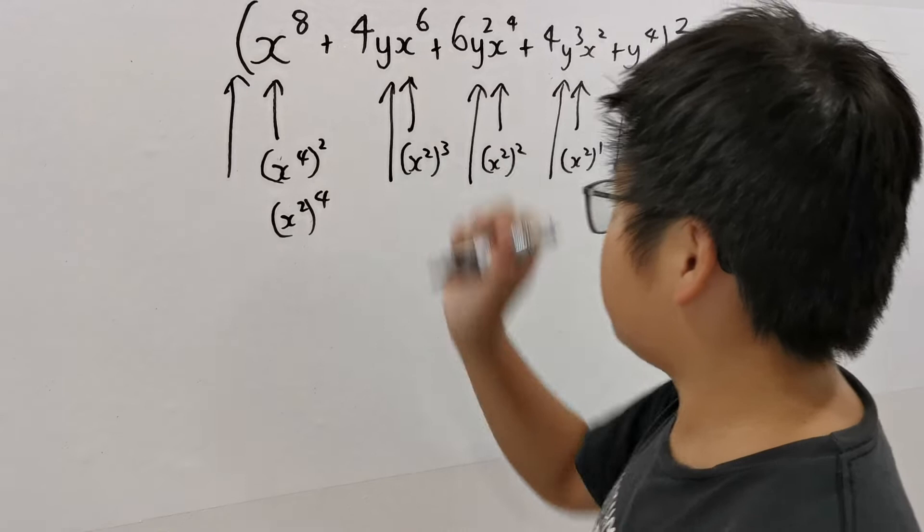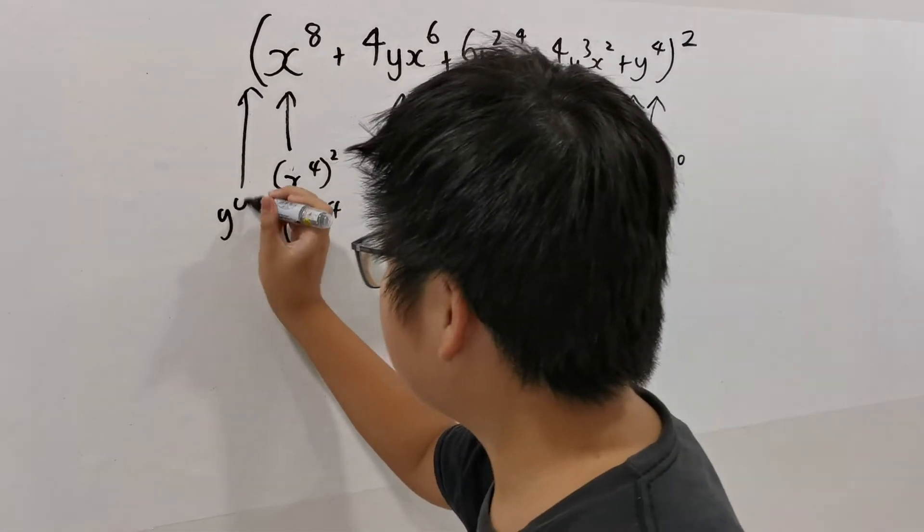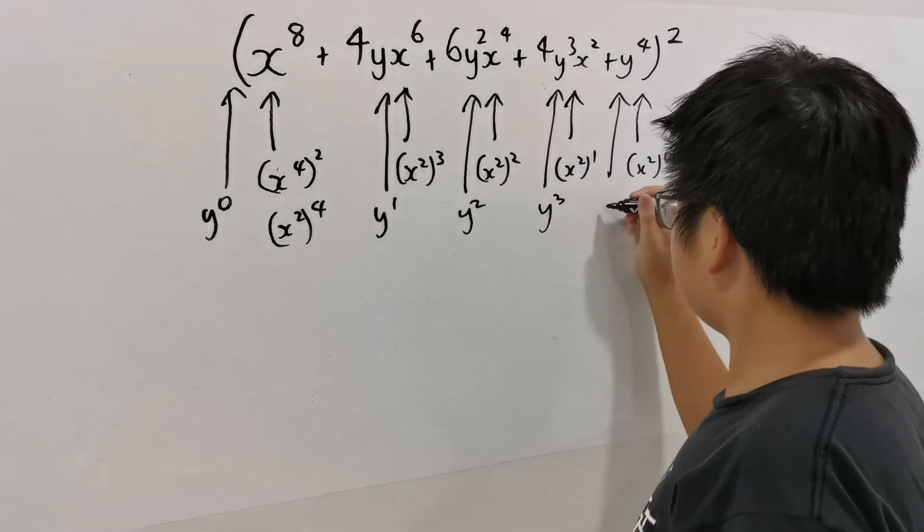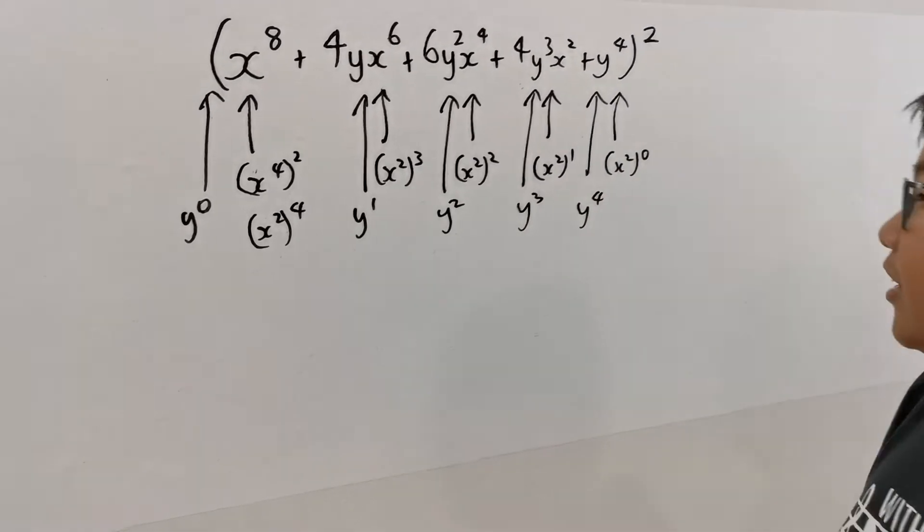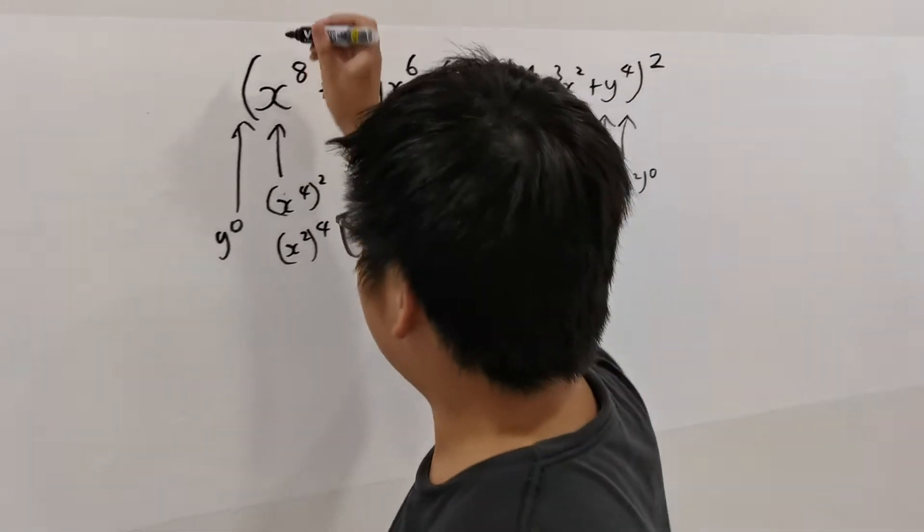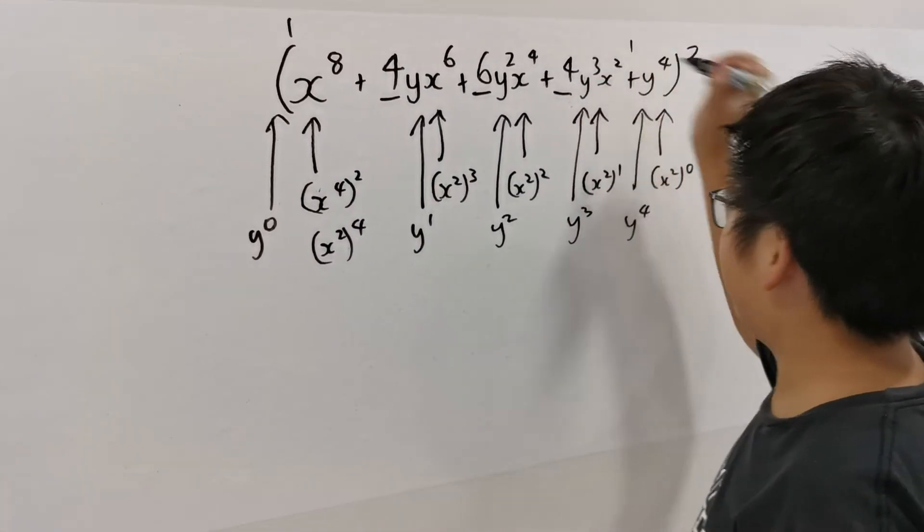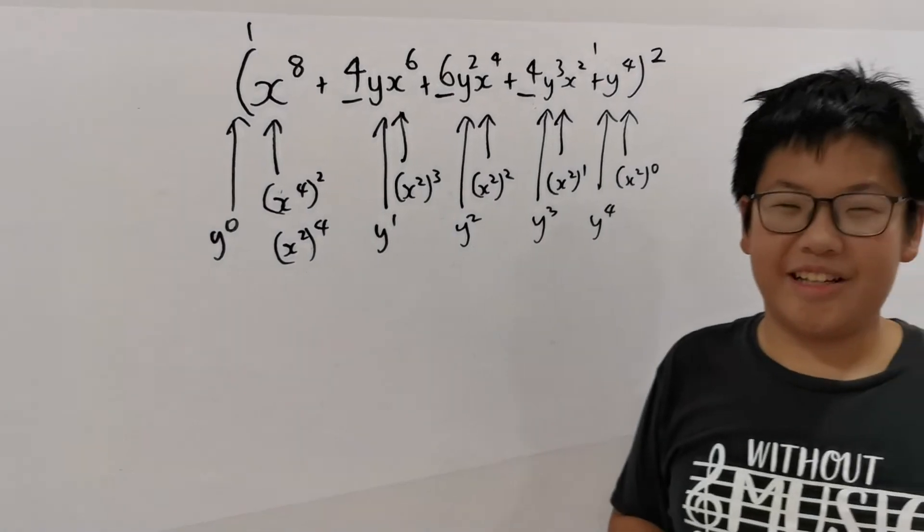Now the other expression, y to the power of 0, y to the power of 1, y squared, y cubed, y to the 4. Now look at the coefficients. 1, 4, 6, 4, 1.